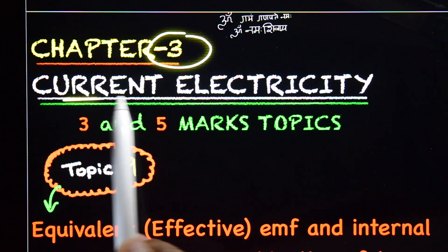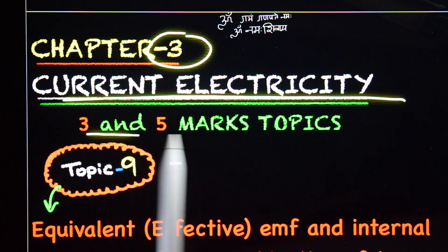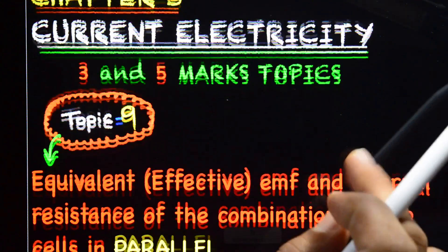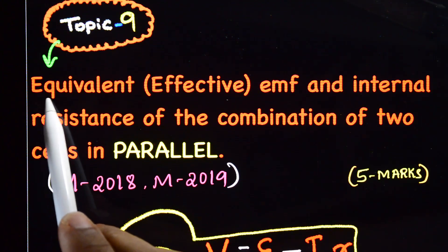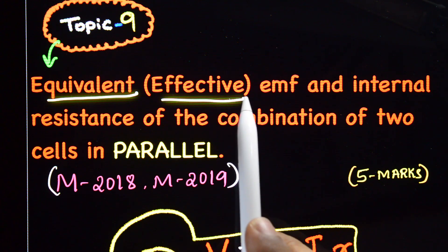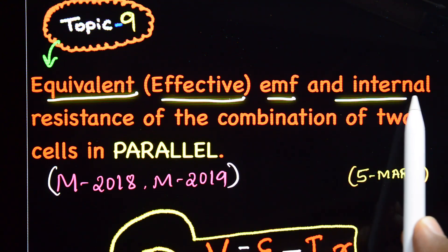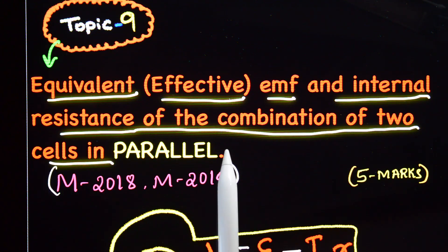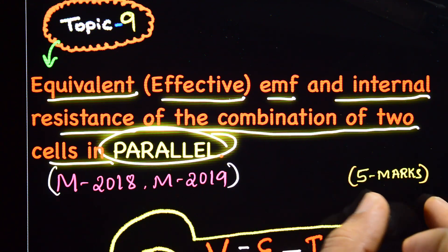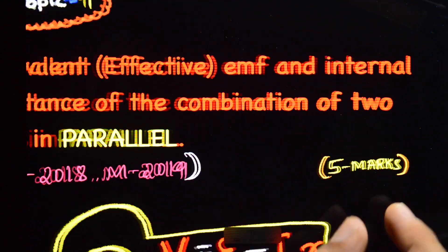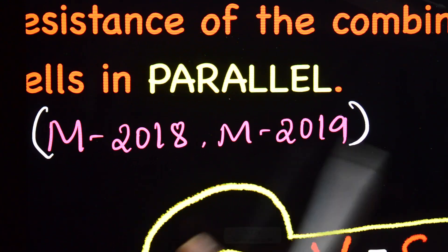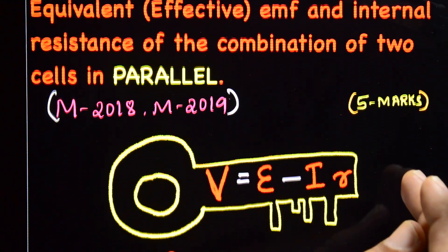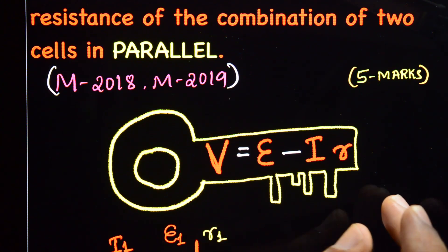Chapter 3: Current Electricity, topics 3 and 5. This is topic number 9: equivalent or effective EMF and internal resistance of the combination of two cells in parallel. The key equation for this topic is v = e - i·r.